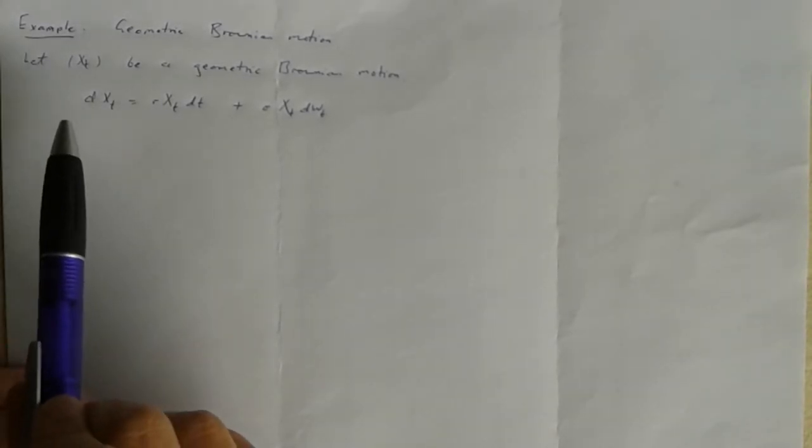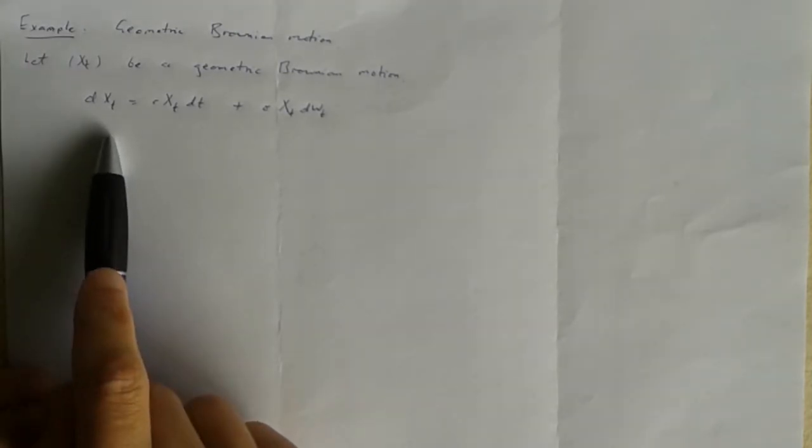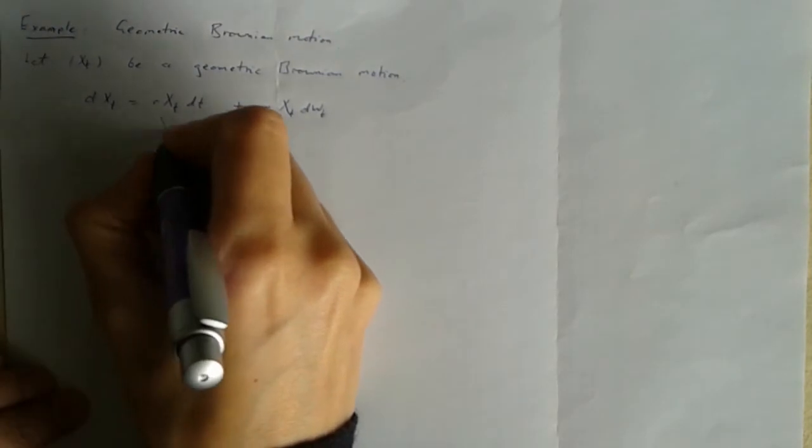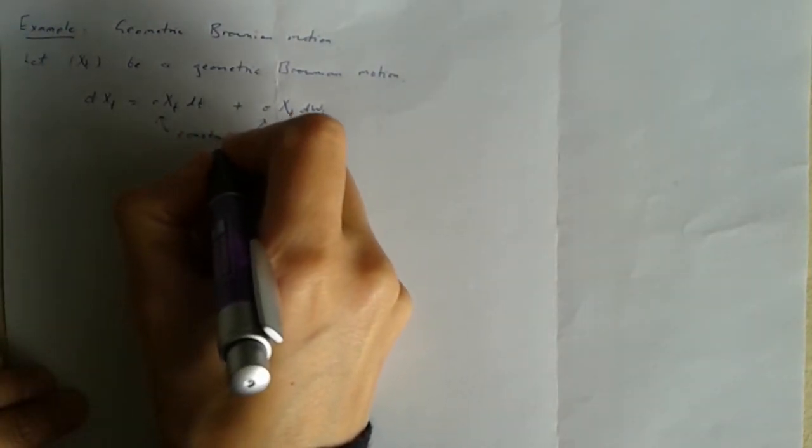For another example let's look at geometric Brownian motion. Remember geometric Brownian motion is this Ito diffusion. It satisfies this stochastic differential equation. Its drift is a multiple of itself and its speed is also a multiple of itself. That is this R and this sigma are just constants. When I introduced this before I said that it's used as a model of a risky asset, the price of a stock in a stock market or something like that. And in that context, one of the most interesting things about it is this number, this R, that determines its growth rate. So what we're going to do now is a Cameron-Martin-Girsanov change of measure which changes that bit, changes the drift of the process.